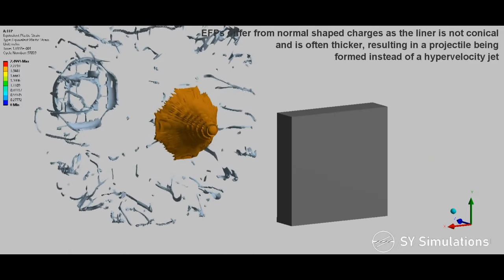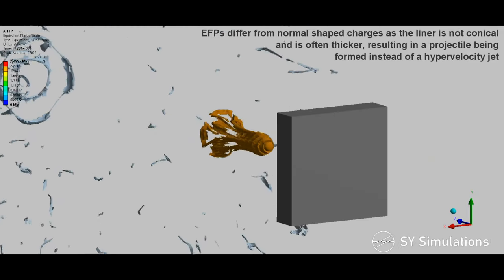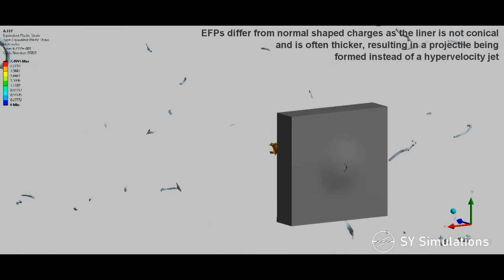EFPs differ from normal shaped charges as the liner is not conical and is often thicker, resulting in a projectile being formed instead of a hypervelocity jet.